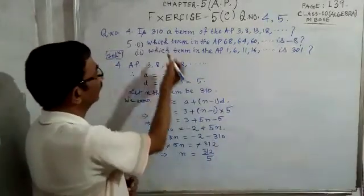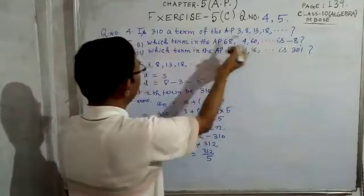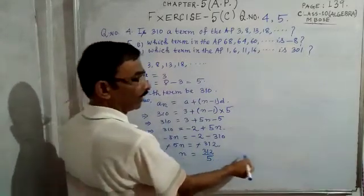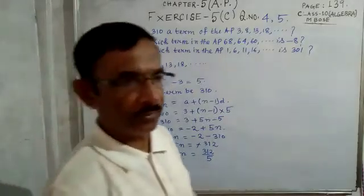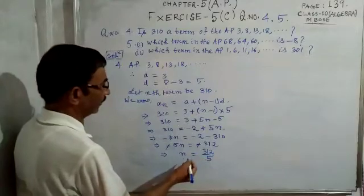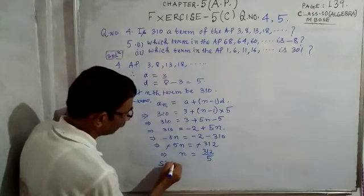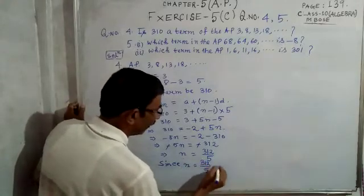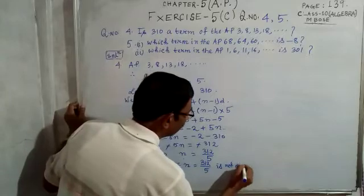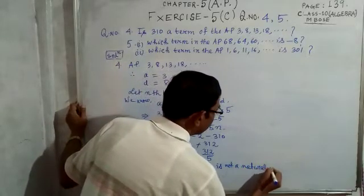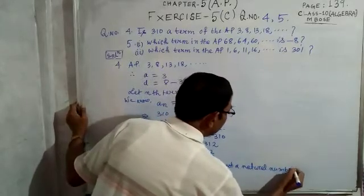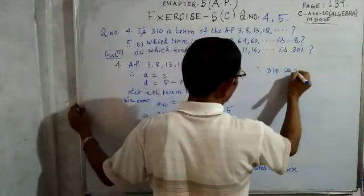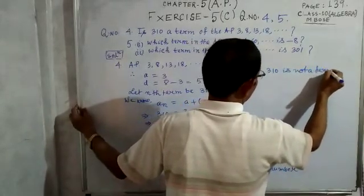Since n = 312/5 is not a natural number, 310 is not a term of the given AP. For 310 to be a term, n must be a natural number — a counting number like 1, 2, 3, 4, 5, etc. Therefore, 310 is not a term of the given AP.